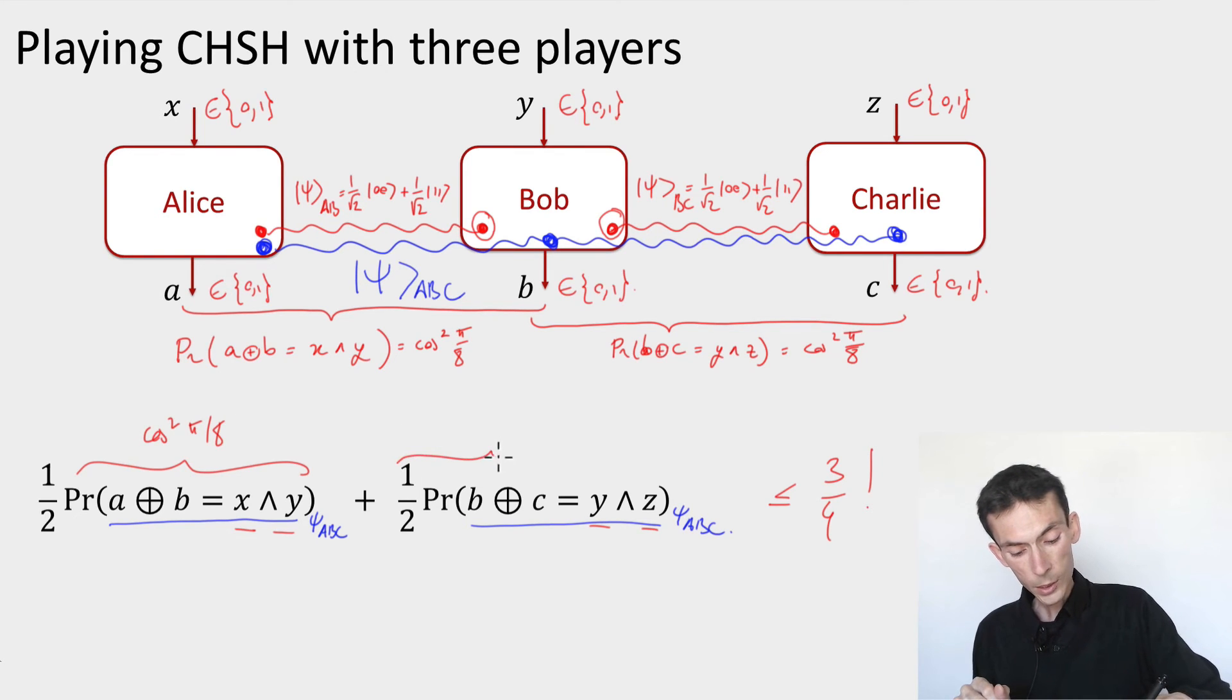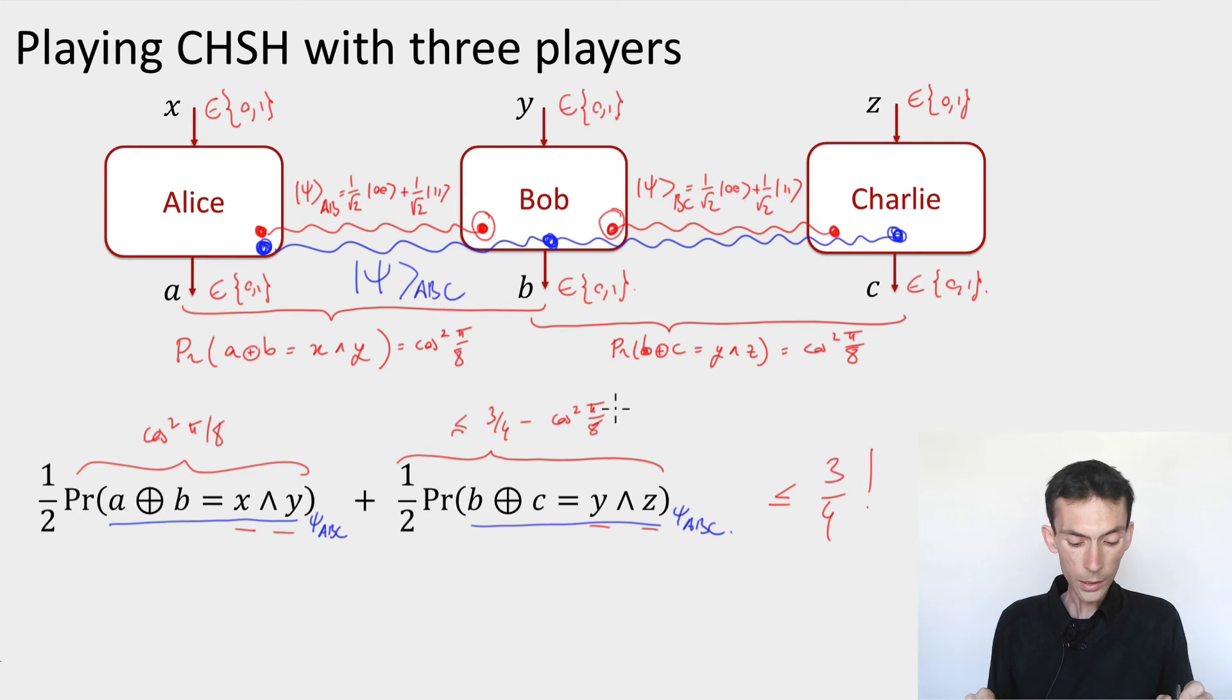then this expression here, by virtue of the inequality I wrote down, must be at most three quarters minus cos squared pi over 8. Meaning that it can definitely not achieve the quantum bound, actually it must be much smaller. So how do you prove such a thing?